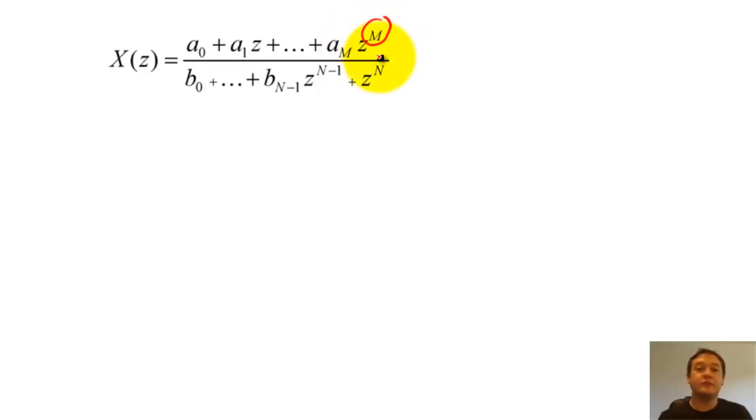If the degree of the numerator is less than the degree of the denominator, X of Z is a proper function.